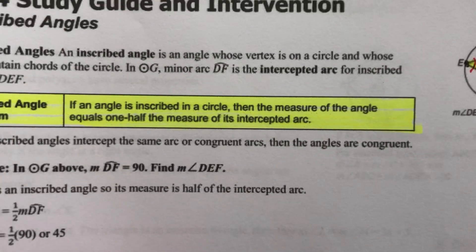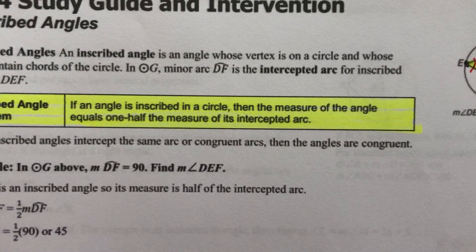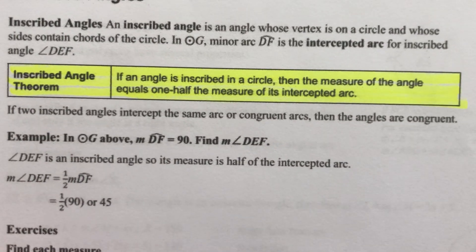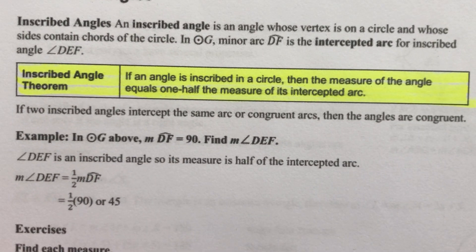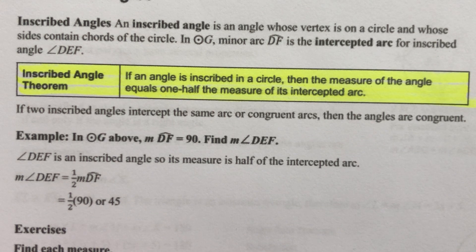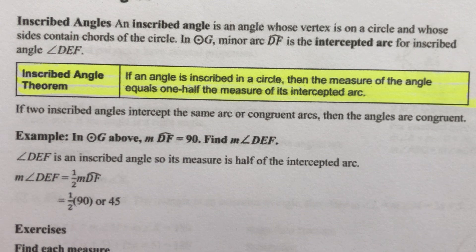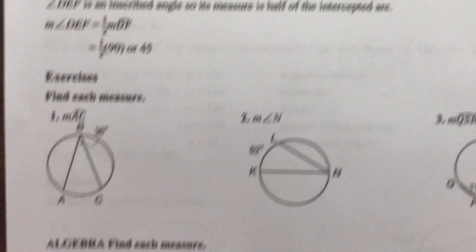So here's the rule — pause this and write it down if you need to: an inscribed angle is half the measure of the intercepted arc. Let's do a few examples of that.